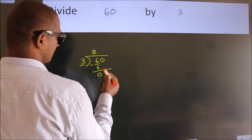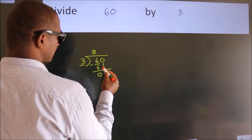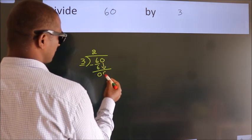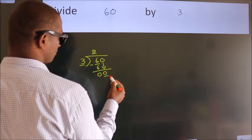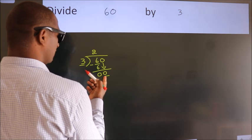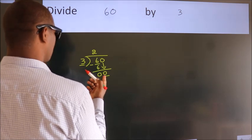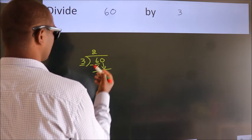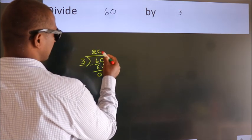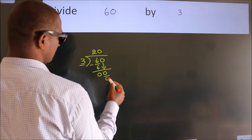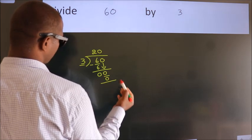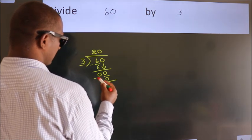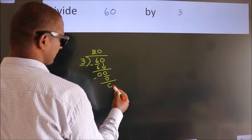After this, bring down the beside number. So, 0 down. When do we get 0 in the 3 table? 3 times 0 is 0. Now we subtract. We get 0.